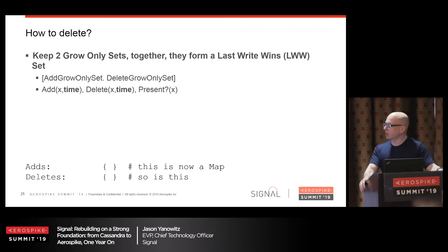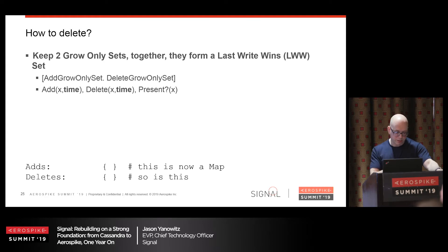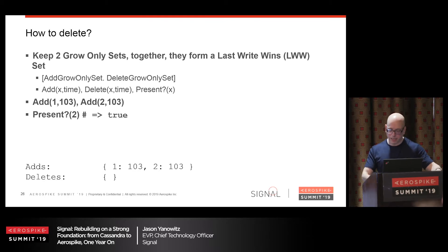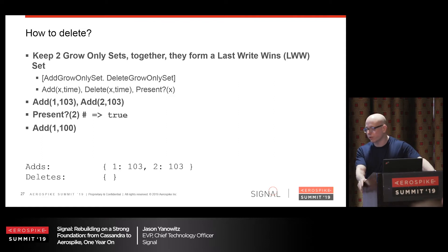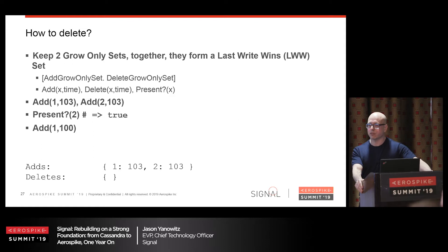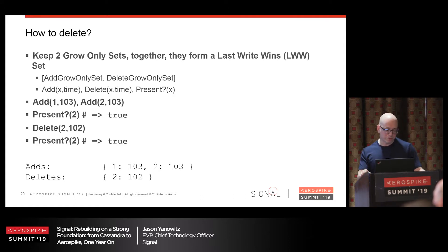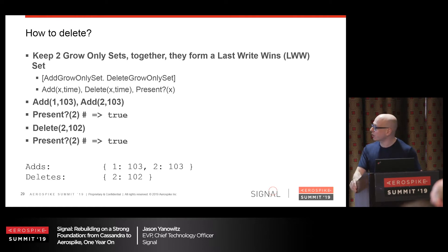Now we get a message to add one with a timestamp of 100. We check our add structure — it says 103, which is more recent than 100. This is a time-traveling message, which we will not allow — we drop it on the floor. If we do a delete with a 102 timestamp, and ask if the two is there, it's still there because when we compare adds and deletes, 103 is more recent — so it's currently visible in the set. And that's how you implement a last-write-wins set with CRDTs.